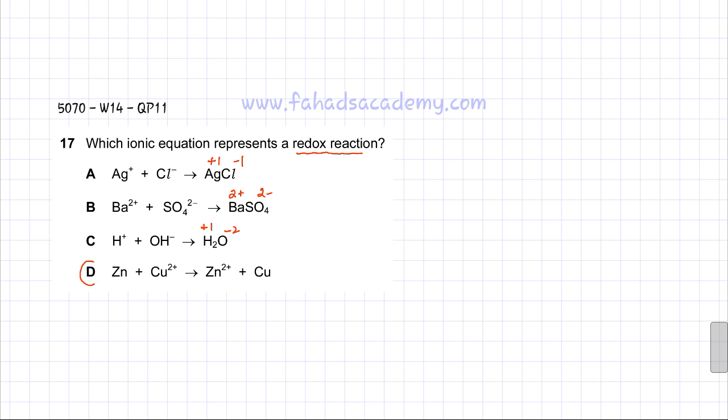Option D is the correct option. If you look over here, zinc was neutral first and became Zn2+. The only way it can form Zn2+ is if it lost 2 electrons. So this is oxidation.